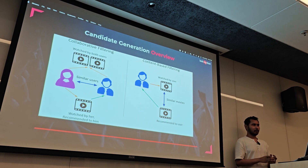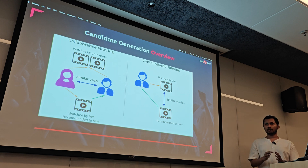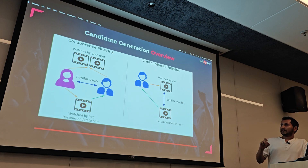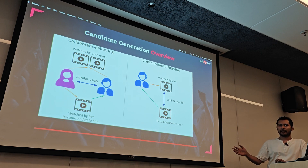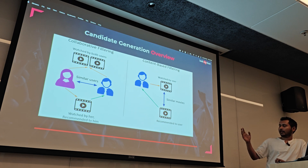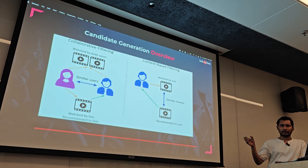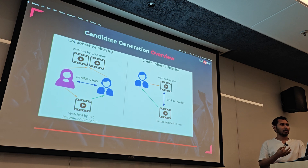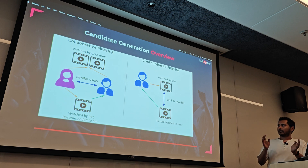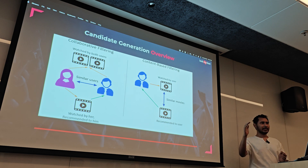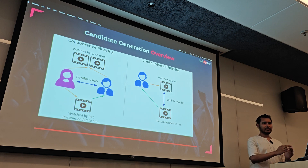Content-based filtering focuses solely on you as the user, not on other users. For example, if you watch a lot of Marvel movies, we look at which other movies are similar to Marvel — using attributes like genre, artists, directors, and synopsis. Based on these movie attributes, we determine that movie A is similar to movie B, and hence recommend movie B to that user.